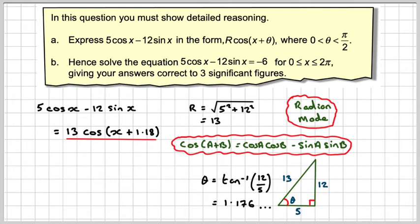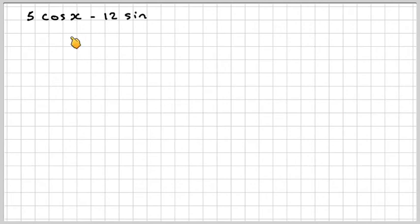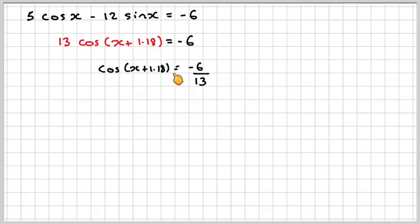Writing down the equation 5 cos x minus 12 sin x equals minus 6, we can say this is now 13 cos(x plus 1.18) equals minus 6. Dividing by 13, we get cos(x plus 1.18) equals minus 6 over 13.